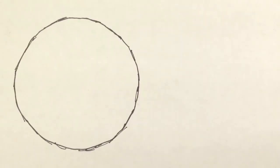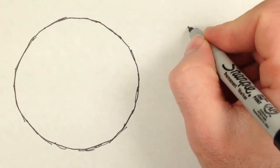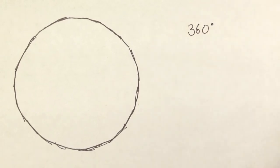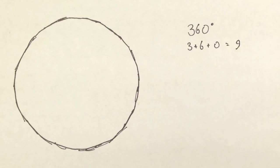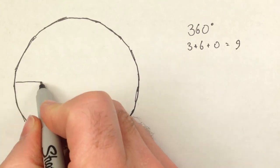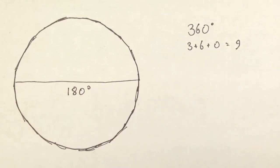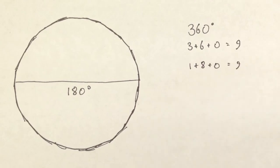The argument goes like this. There are 360 degrees in a circle. The digital root of 360 is 9. If you cut the circle in half, each angle is 180 degrees. The digital root of 180 is also 9.